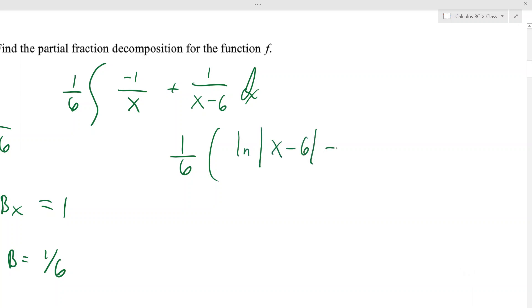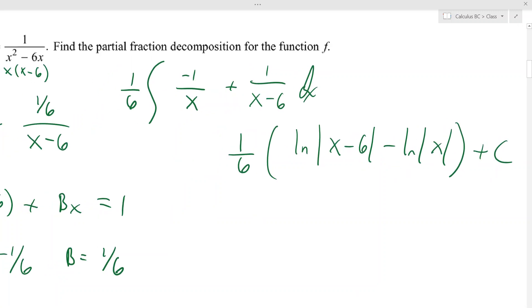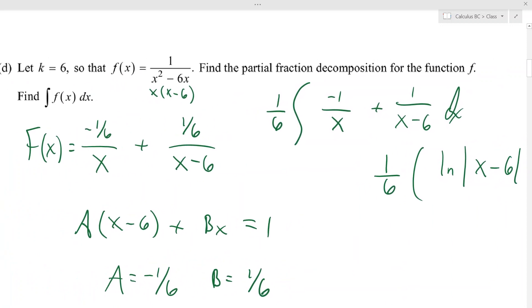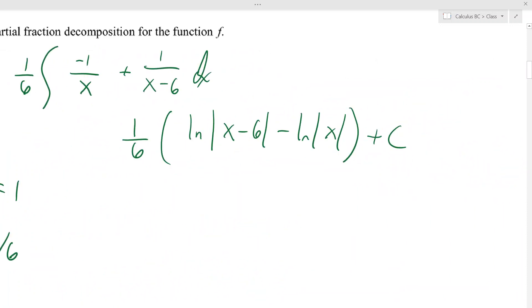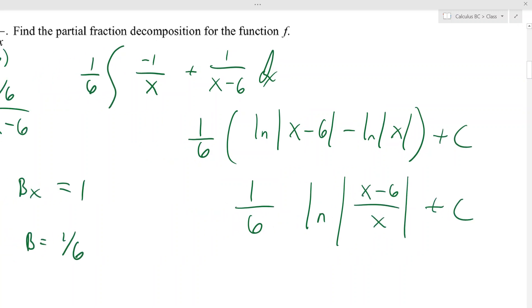And that becomes one sixth the natural log—I'm gonna flip these around because it's gonna be x minus 6 minus ln absolute value of x plus c. They don't ask us to find c or anything, right? They just say find the integral. Okay, and that's it. You could, again, if you felt so inclined, make this the ln of x minus 6 over x plus c. Alright.